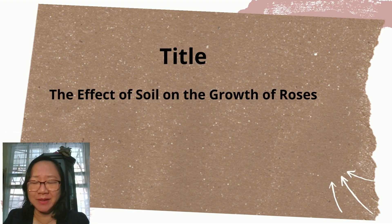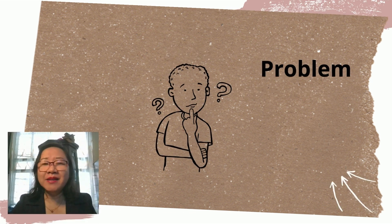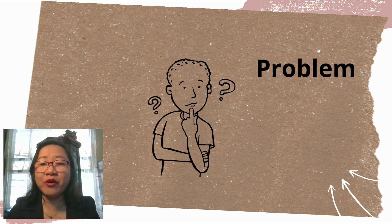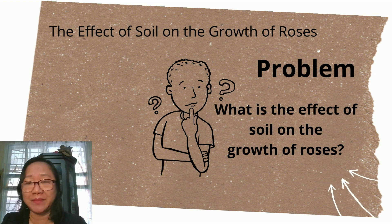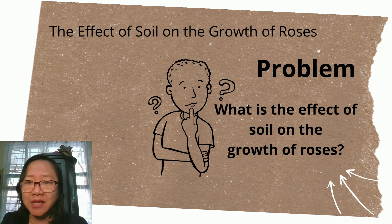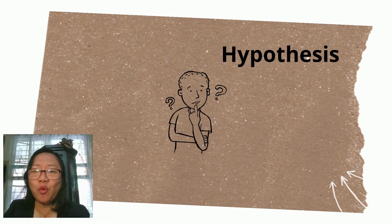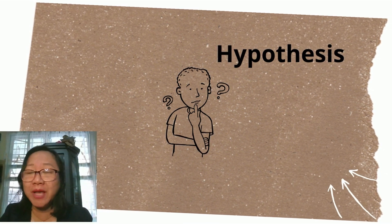Let's have an example. The title is 'The Effect of Soil on the Growth of Roses.' Now that you have a research title, the next thing you will do is identify your problem. Going back to our title, we can formulate our problem as: what is the effect of soil on the growth of roses?